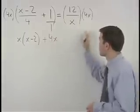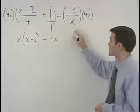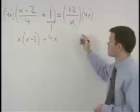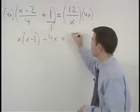And when multiplying 4x times 12 over x, the x's cancel and we have 12 times 4 or 48.